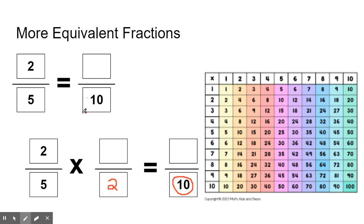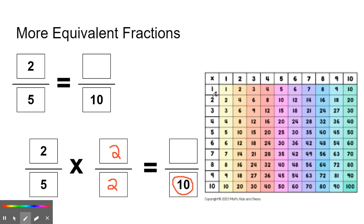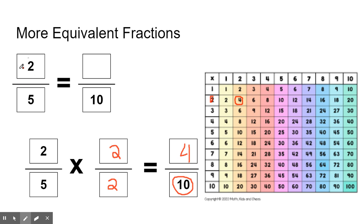Now we have ten in our denominator, which is exactly what we needed for an equivalent fraction. But what we multiply the denominator by, we also have to multiply the numerator by. So we multiply the denominator five times two to get ten, and now we multiply the numerator: two times two. Looking at our place value chart, two times two is equal to four. So the equivalent fraction for two-fifths is four-tenths.